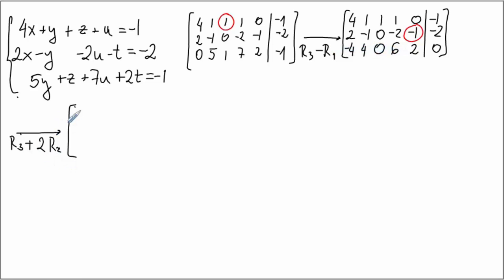So the first row unchanged, second row unchanged, and to the third one we're adding twice the second, so it's zero, two, zero, six minus four is two, two minus two is zero, and zero minus four, negative four.